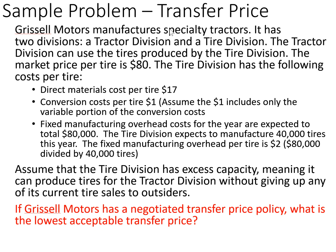Here we have a problem that relates to transfer price. Grazile Motors manufactures specialty tractors. It has two divisions: a tractor division and a tire division. The tractor division can use the tires produced by the tire division, and the market price per tire is $80.